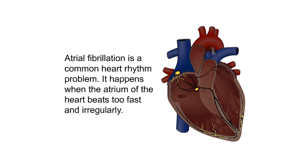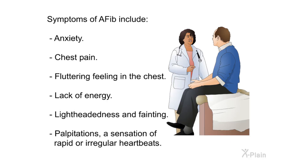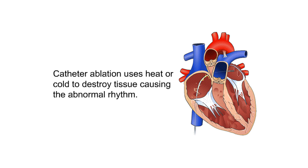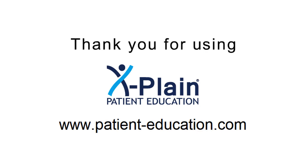Summary. Atrial fibrillation is a common heart rhythm problem that occurs when the atrium of the heart beats too fast and irregularly. Symptoms of AFib include anxiety, chest pain, fluttering feeling in the chest, lack of energy, lightheadedness and fainting, and palpitations. Treatment aims to slow and regulate the heartbeat and reduce the risk of blood clots leading to strokes. Catheter ablation uses heat or cold to destroy tissue causing the abnormal rhythm, and may be suggested for patients at risk of serious complications or where medications have failed.